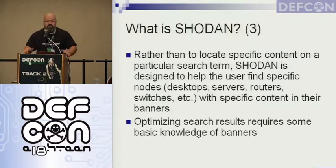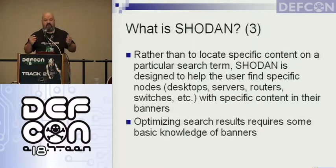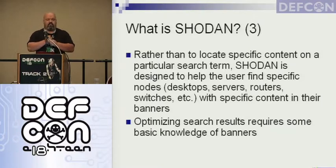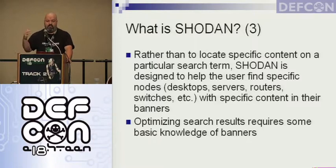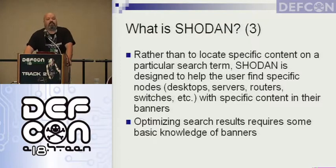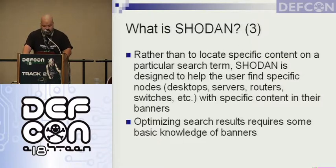So instead of looking for specific content on a page, we're looking for specific information about the device — is it a desktop, a server, a router, a switch, or a printer? We can find that out by looking at the content in the banner. Typically these are on port 80, but they could be banners on port 21, 22, 23, or some others. Optimizing search results for Shodan is helpful if you have some knowledge of what a banner looks like.